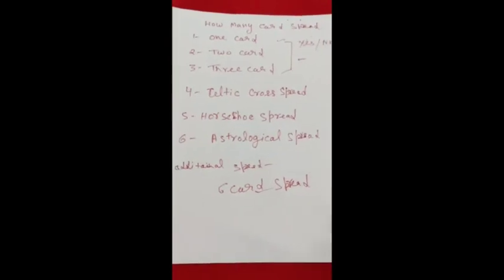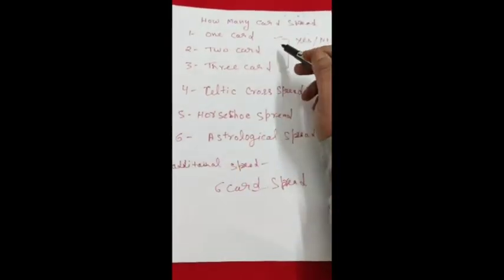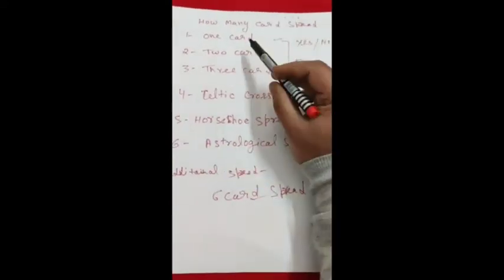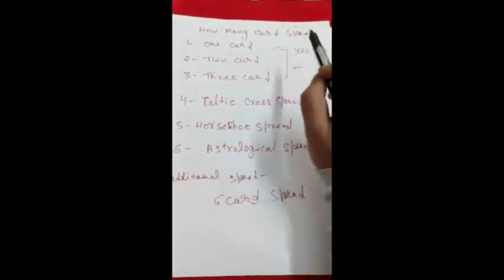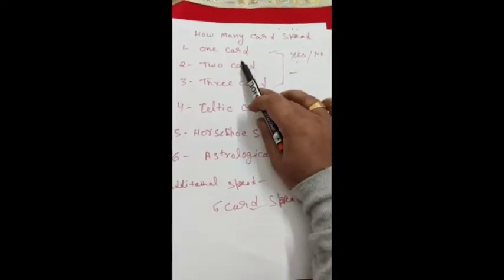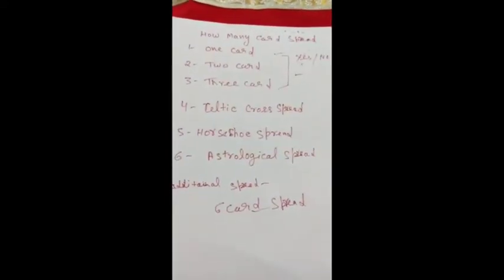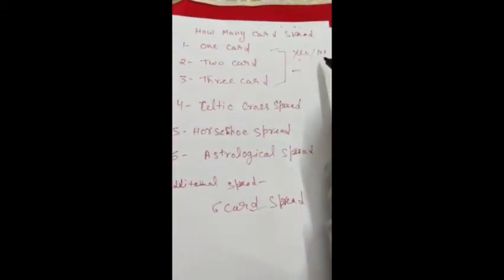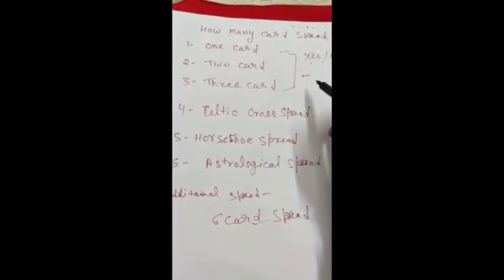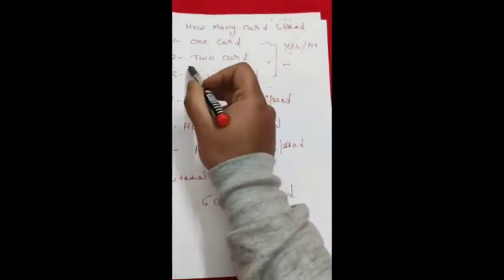If you are a beginner, please use only three card spread techniques: the one card, two card, and three card spread. One card spread is for a simple yes or no answer. If your client wants to ask whether their work is done or not — yes or no — then use one card. If you need a yes or no answer but also one supportive card, then use the two card spread.